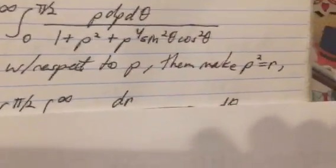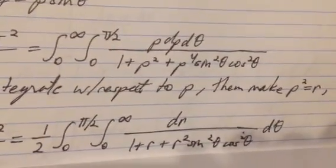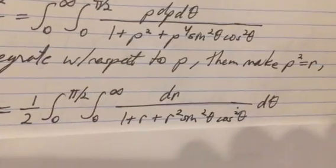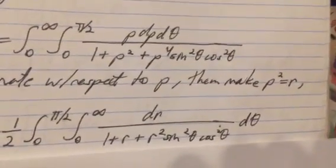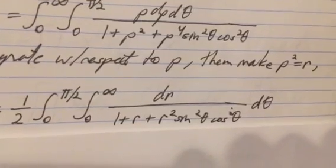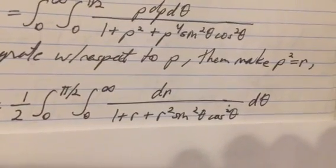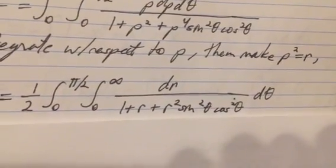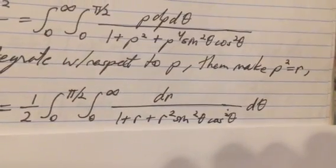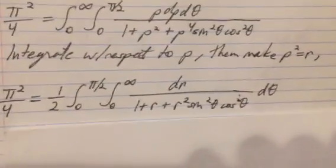And then we'll make rho equal to r squared, so I kind of did two things in one step there. And you can look that integral up in any book on your integral tables, any good set of integral tables like Dwight's or Gradshteyn and Ryzhik.